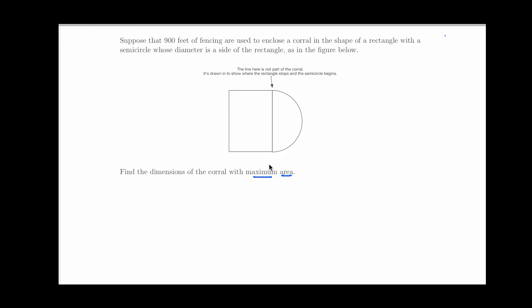Right off the bat we see this is an optimization problem because I'm being asked to maximize something. The first important thing we need to realize is what quantity am I being asked to optimize? That answer is area of this whole thing. The first order of business is to get a formula for area because I'm going to use calculus to find the absolute maximum of area. If I don't have a function for it, I can't use calculus.